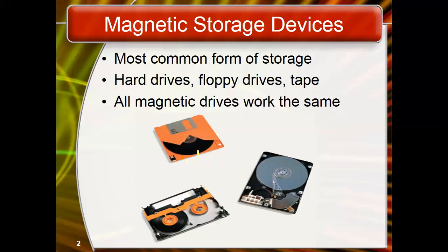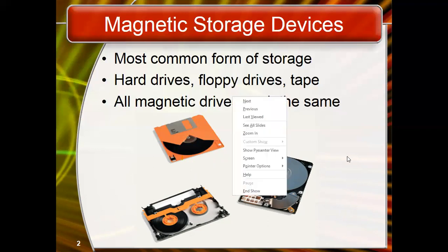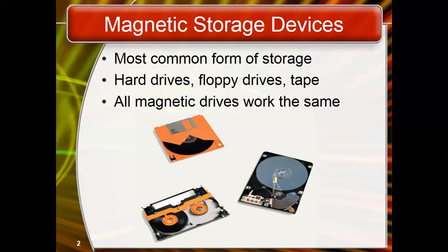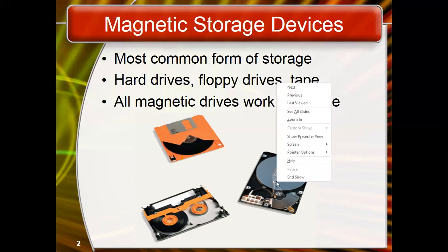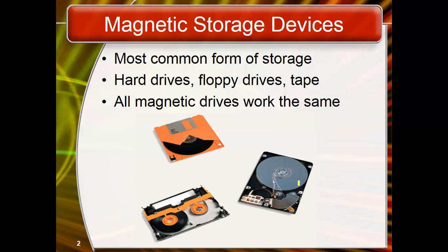The media, typically called a disc, is rotated at high speed by a motor. It is accessed by devices called heads. Each head has a tiny electromagnet consisting of an iron core wrapped with wire. This electromagnet applies a magnetic force to the oxide on the media, and the oxide permanently remembers the magnetic flux it receives.